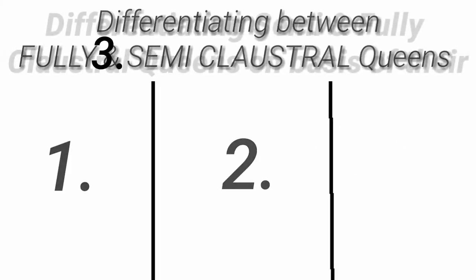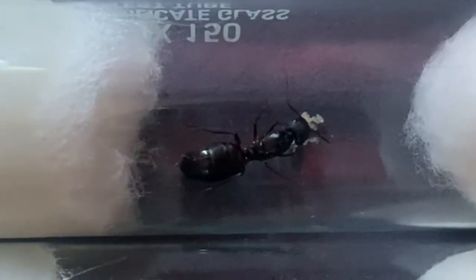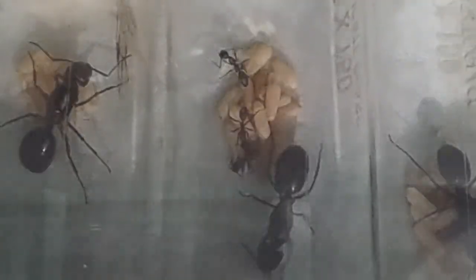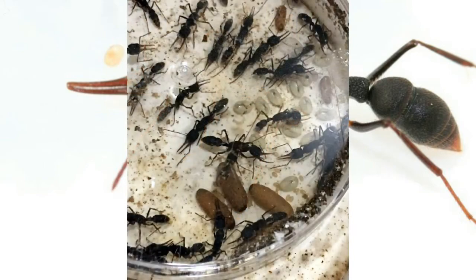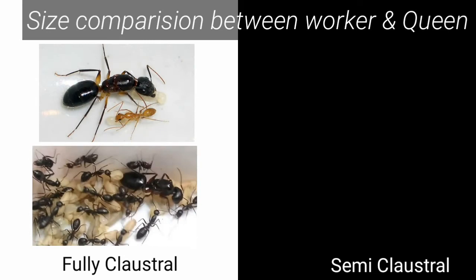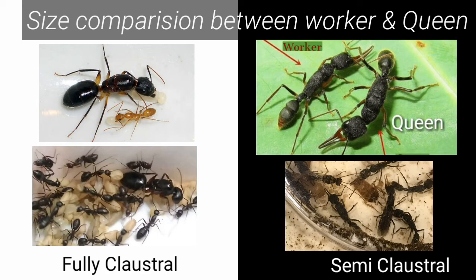The last point to differentiate fully and semi claustral queens is on the basis of their workers. After a fully claustral queen lays its eggs, they take just about a month to turn into adult workers, because the limited food supply inside the queen's body is designed to boost the development process. In the case of a semi claustral queen, it takes around two months or even more to develop from egg to adult worker. When it comes to size, the workers and even the super majors of a fully claustral queen are smaller compared to their queen, but in many semi claustral species, their workers are equal in size to the queen.